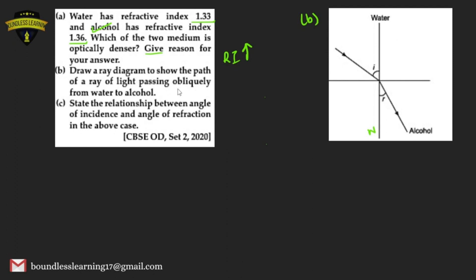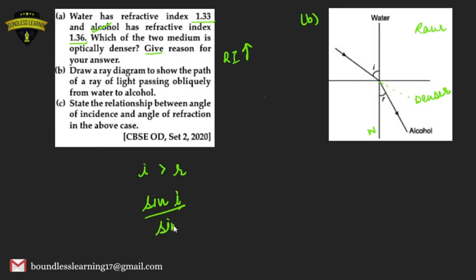Draw a ray diagram showing the path of light passing obliquely from water to alcohol. Water is the rarer medium and alcohol is the denser medium. The ray of light bends towards the normal, making angles i and r with the incident and refracted rays respectively. According to Snell's law: sin i / sin r = constant.